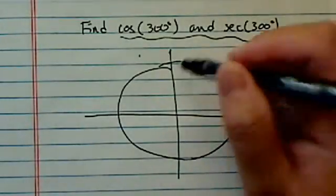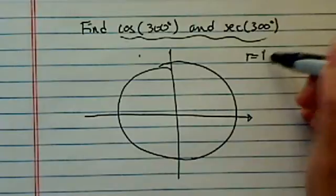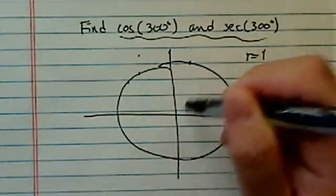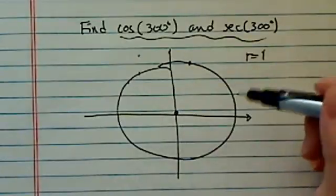The unit circle is named so because the radius is 1. So basically all the points on the curve are one unit from the center.